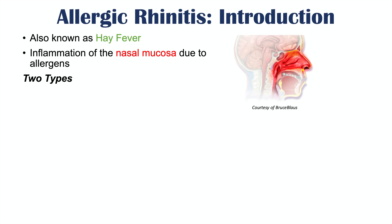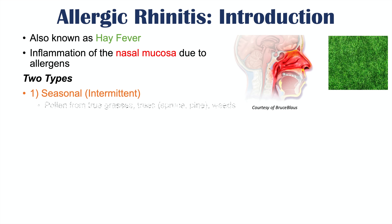There are actually two types of allergic rhinitis. One is known as seasonal or intermittent, and it is caused by pollen from seasonal sources — pollen from true grasses, certain trees like spruce, pine, and weeds. There are many other causes but these are some examples.